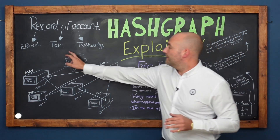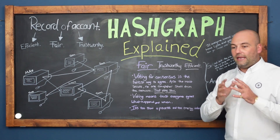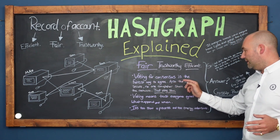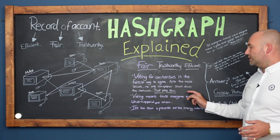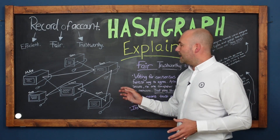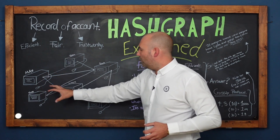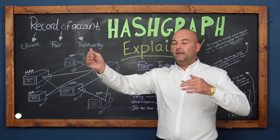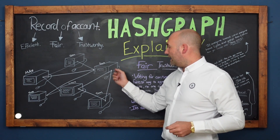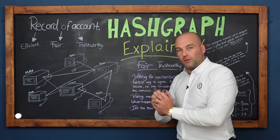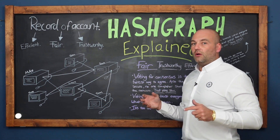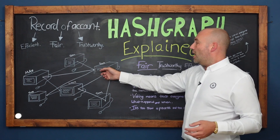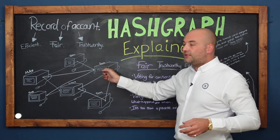The fairest way of having anything decided is by voting — everybody agrees by vote. Voting for consensus is the fairest way to agree, and also the most secure — no one computer shuts down the network. But it's very slow. If all of these computers send information to one computer and that computer makes the decision of what happened and in what order, the problem is that if that computer gets attacked, it only takes pulling down one computer for the whole system to fail. It's also a dictatorship — some people will disagree with the decisions of the king or emperor, so it can be very unfair.